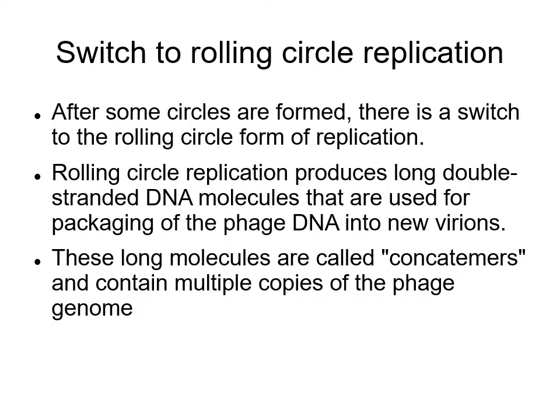After circles are formed, there is a switch to what's called the rolling circle form of replication. Rolling circle replication produces the long double-stranded DNA molecules used by the virus to package phage DNA into new virions. These long molecules are called concatemers — they contain multiple copies of the phage genome punctuated by the cos sites that are used as signals for packaging these molecules into virions.